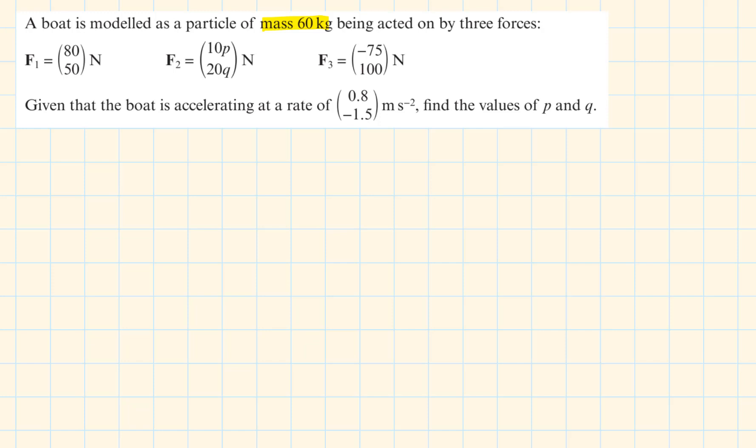In this example, instead of using i and j to represent the x direction and the y direction, we are using column vectors, which is pretty much representing the same thing. We can start by calculating the resultant force by adding F1, F2 and F3. Then simplify it. Adding the x values, we will have 80 plus 10P plus minus 75.